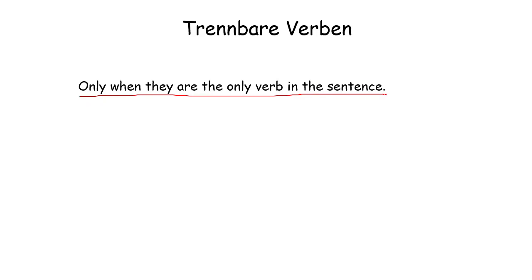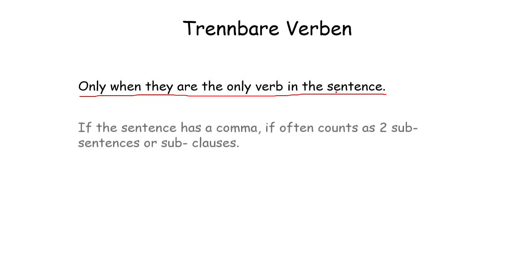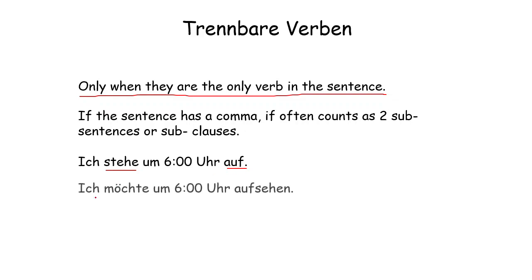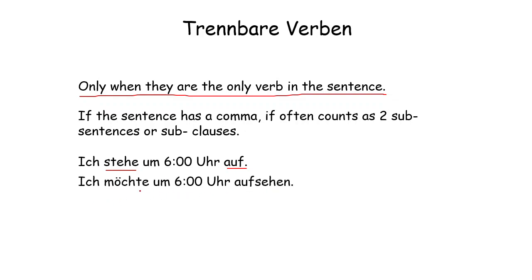Verbs will separate only when they are the only verb in the sentence. If the sentence has a comma, it often counts as two sub-sentences or sub-clauses. For example: 'Ich stehe um sechs Uhr auf' — here 'aufstehen' is the only verb, so 'auf' goes to the end. But 'Ich möchte um sechs Uhr aufstehen' — I would like to get up at six o'clock — here 'aufstehen' goes at the end as a whole because 'möchte' is the modal verb at the second position.